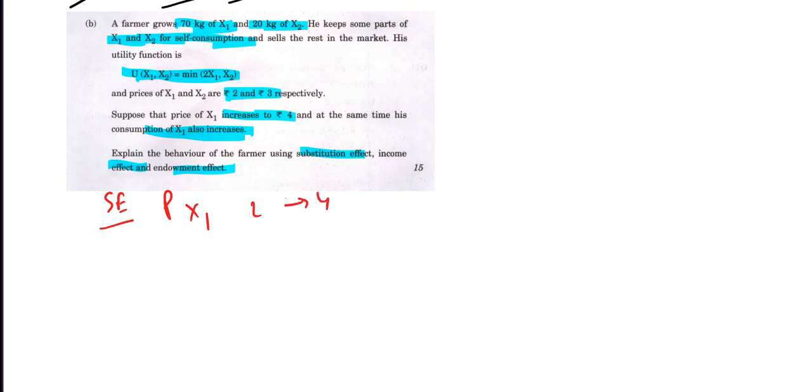The farmer may choose to consume relatively less X1 and more X2. This is the farmer's desire to maximize utility within the constraints of the new price ratio. The farmer substitutes away from the relatively more expensive X1 towards relatively cheaper X2 to maintain a similar level of utility.